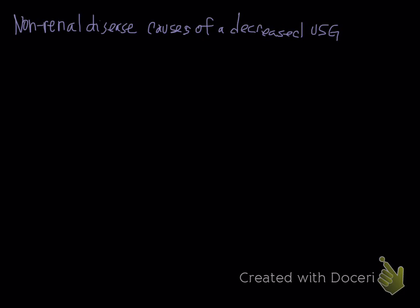All right, this isn't the catchiest of titles: non-renal disease causes of a decreased USG, because a lot of these are actually renal, they're just not renal disease. So why care? Well, you should care because acute kidney injury and chronic kidney disease have a much different prognosis than a lot of these diseases and syndromes that we're going to talk about, and they have very different treatments.